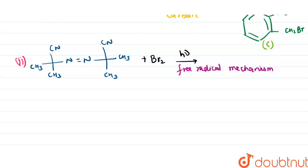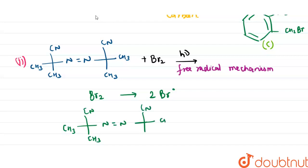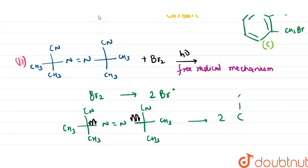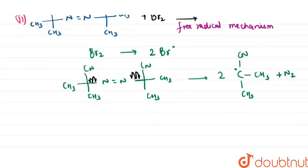What happens here is bromine forms two bromine free radicals. The initiator compound — (CH₃)₂C(CN)–N=N–C(CN)(CH₃)₂ — undergoes homolytic bond fission, enhancing the formation of two free radicals: •C(CN)(CH₃)₂, and N₂ is released.